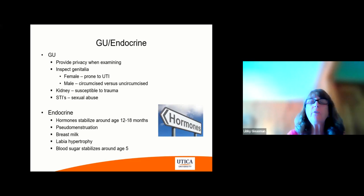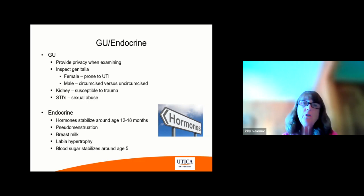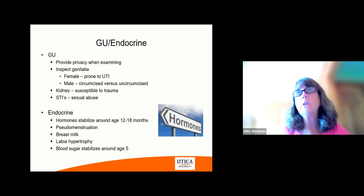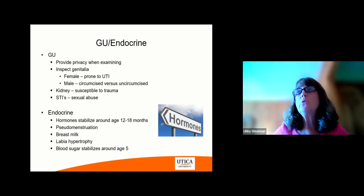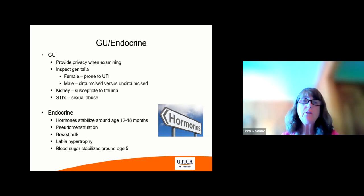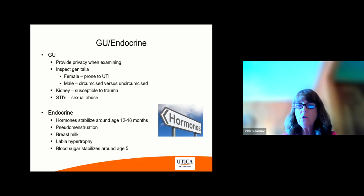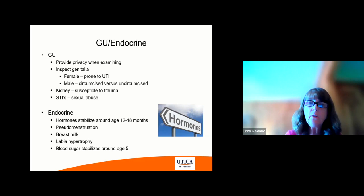The GU system — again, provide privacy and inspect the genitalia. Females are prone to urinary tract infections. Males could be circumcised or uncircumcised; if they're not circumcised, you need to pull the foreskin back to do an examination and also teach the child to do so depending on their age. The kidney is very susceptible to trauma — just think about where the kidneys lie on your lower back. STIs indicate possible sexual abuse and need to be addressed. The endocrine system: hormones stabilize at 12 to 18 months, so they're very unstable when born. Newborns can have pseudo menstruation, breast milk, and labia hypertrophy, which can be normal. The blood sugar doesn't stabilize until age five.